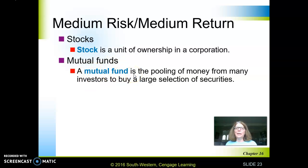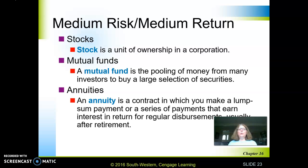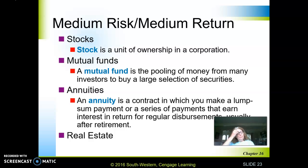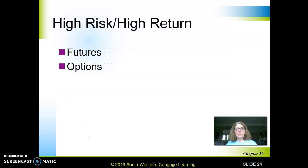Then there are annuities — this one is more complex. It's a contract where you make a lump sum payment or a series of regular payments, and they earn interest. Typically when you retire, you start drawing money out on a continuous or annuity basis. Then there's real estate — medium risk, medium return — which is buying land or buildings and getting a return from rent and similar income. Though on the summary sheet, some of these like stocks may also be listed as higher risk.